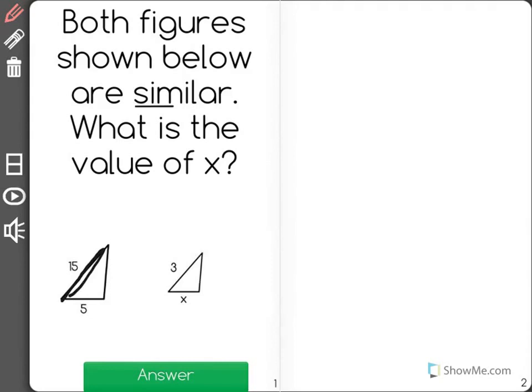So that means that the 15 here would be similar to the 3. So there's a ratio that for every 15 units we have on the larger triangle there will be 3 on the smaller triangle.